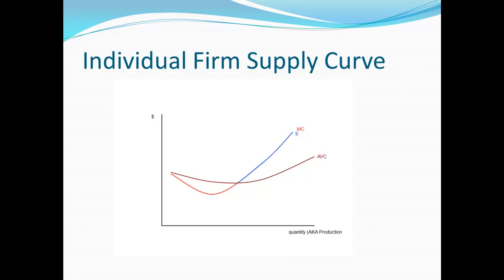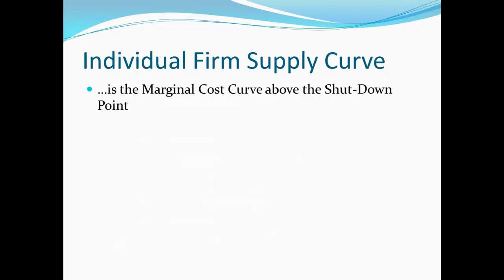As long as the price is below that minimum average variable cost, we produce nothing. But once we hit that minimum average variable cost, we want to produce according to the marginal cost curve. What this has done is proven to us why it is that supply curves slope up. It really comes down to the fact that our output decisions are based on marginal cost and marginal revenue, which means our marginal cost curve is basically the supply curve. Since marginal cost slopes up anywhere that it's above the average variable cost, we end up with upward sloping supply curves. The individual firm's supply curve is the marginal cost curve above that shutdown point.